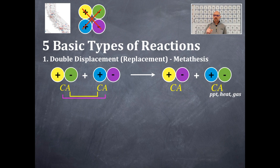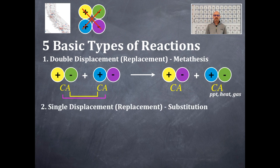One more thing: one of the products in a double displacement reaction is either going to be a precipitate, heat, or gas.